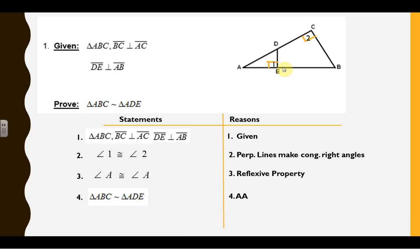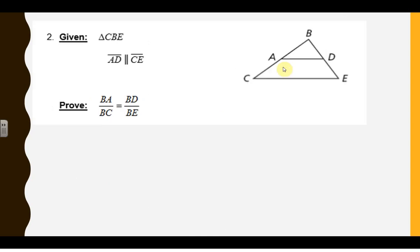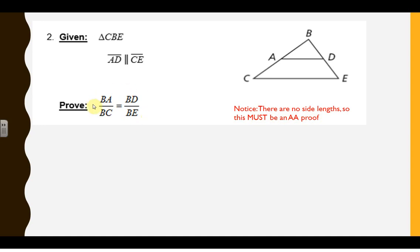They're really that easy — usually about four to five steps. Over here, I'm given triangle CBE and parallel sides. Notice we don't have any side lengths, so this must be an angle-angle proof. Because there's no side lengths, this has to be an angle-angle proof.